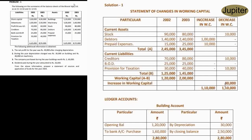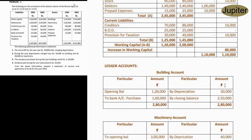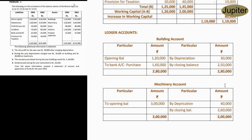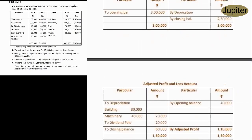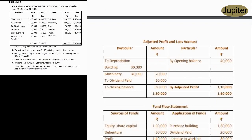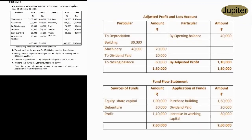Total increase in working capital. Now adjusting the profit and loss account — this is the calculation of fund from operations. We will adjust the profit to get fund from operations. By opening balance: 40. To depreciation on building and machinery: 30 and 40, total 80. Depreciation is included in this profit — since depreciation is a non-cash expense, we add it back.